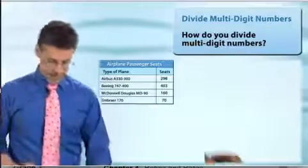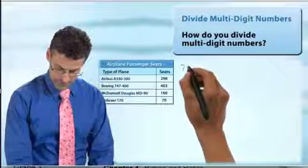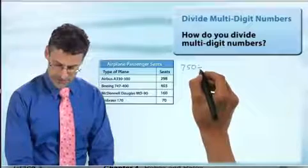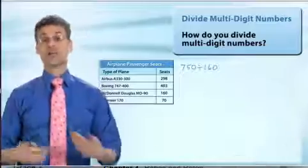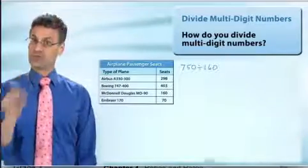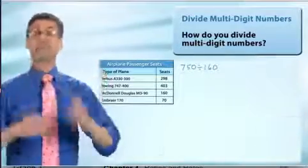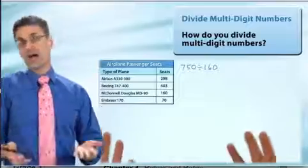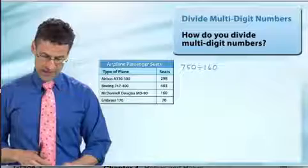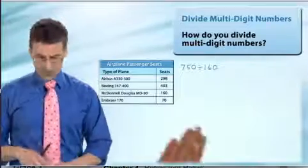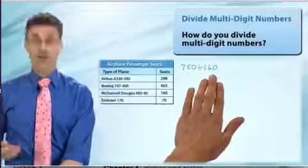So this is really a question about division. We want to take 750 and divide by 160. That's going to tell us how many planes we need. So before we actually perform this division, we can actually estimate to get a rough sense of how many planes we might need. And how would we do that? Well, one way to do it is just to estimate. And so let's find a compatible number. So let's find a number that's compatible to 750 that's near 160.